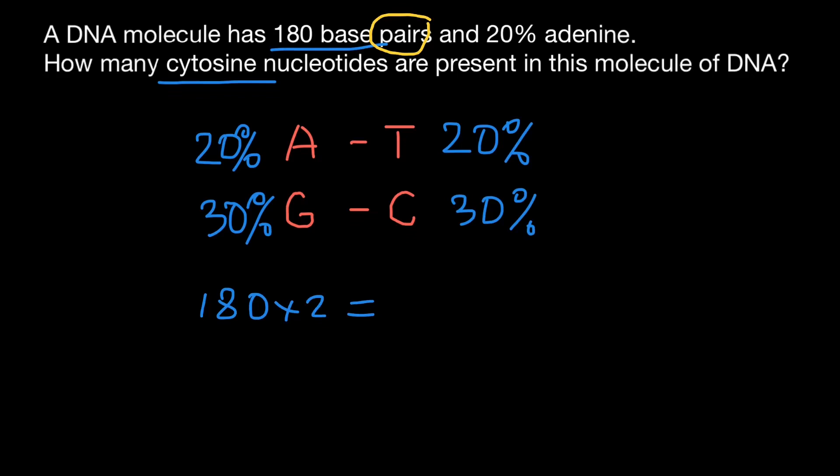We are going to find the number of nucleotides in this double-stranded DNA, which equals 360.